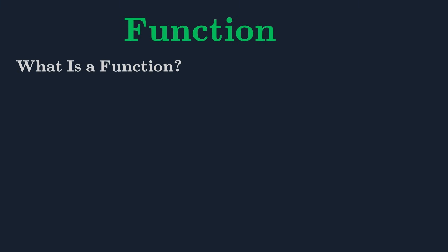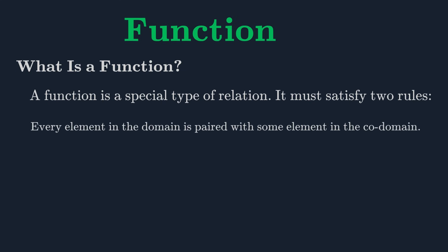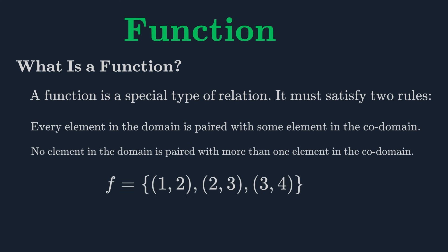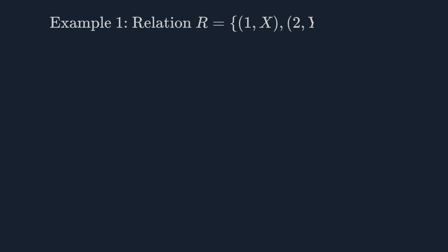A function is a special type of relation. For a relation to be a function, it must satisfy two conditions. First, every element in the first set, called the domain, must be paired with an element in the second set, called the codomain. Second, no element in the domain can be paired with more than one element in the codomain. In other words, each input has exactly one output. Let's look at our previous example. Is the relation R = {(1, x), (2, y), (3, x)} a function from A to B? Yes, it is. Every element in the domain A, which is {1, 2, 3}, is paired, and each element is paired with only one element in B. For instance, 1 is only paired with x, not with y.